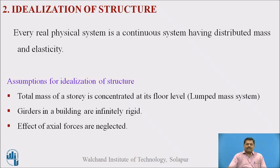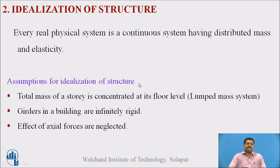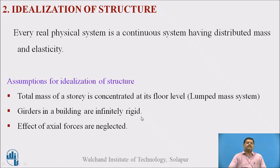This is the idealization of the structure. Every physical system is a continuous system having distributed mass and elasticity. This is the important statement for idealization. The assumptions for idealization are: first, total mass of a story is concentrated at its floor level, which is a lumped mass system; second, girders in a building are infinitely rigid; and third, the effect of axial forces are neglected.